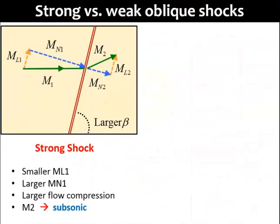We can generally differentiate the strong and weak shocks in the following way. A strong oblique shock has a larger shock angle beta, which decomposes the incoming velocity into a large normal velocity Mn1, and a smaller tangential velocity Ml1.